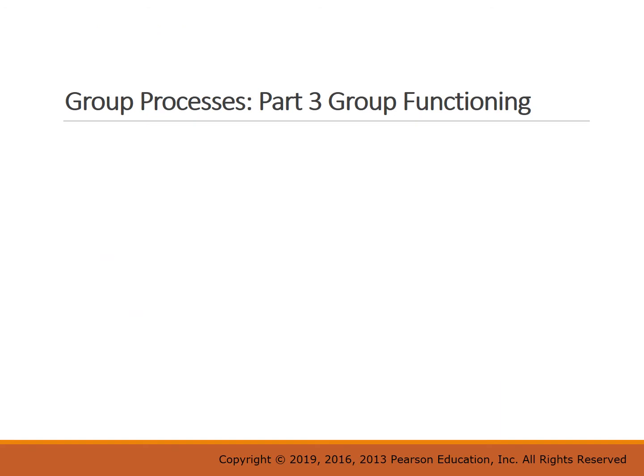We're talking about group processes that impact group functioning. The major function of groups is decision making, and oftentimes we assume it's better to make a decision in a team than just one person making the decision. But is that necessarily true — that two heads are better than one?